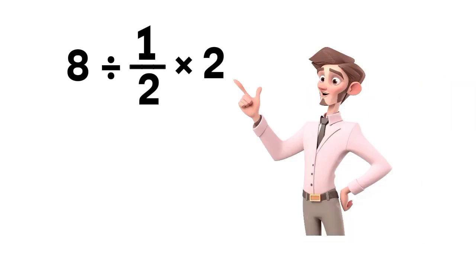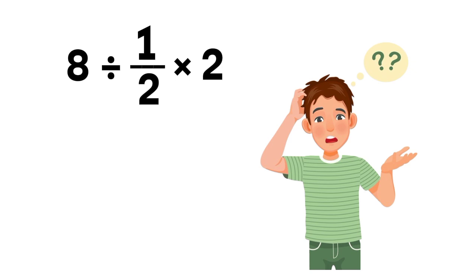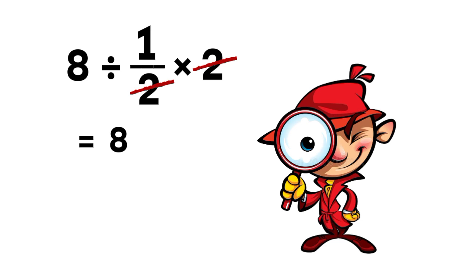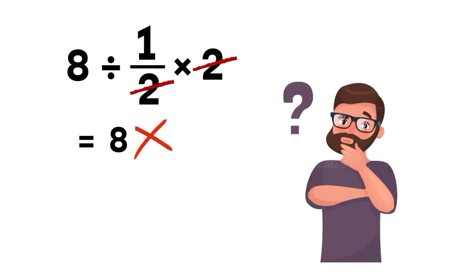Alright, let's take a look at this expression: 8 divided by 1 over 2, then multiplied by 2. At first glance, you might think you can just cancel the 2s and get 8. It looks simple, but that would actually give you the wrong answer. Let's see why.